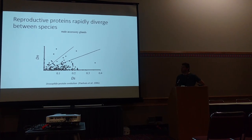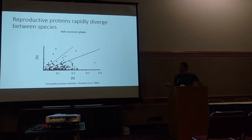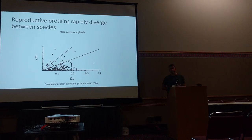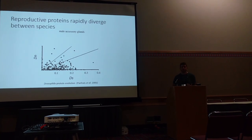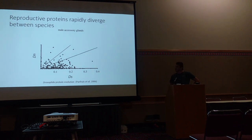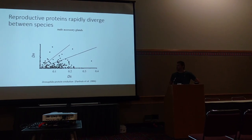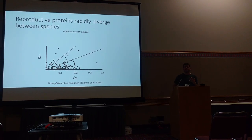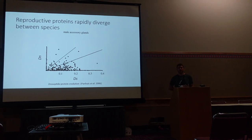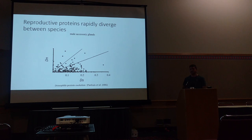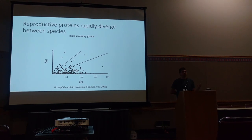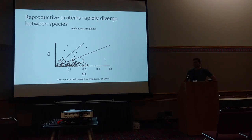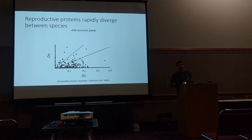Talking about reproductive proteins and molecular evolution might make you think of a classic figure like this. We see time and again in animals that reproductive proteins tend to diverge more quickly than the genomic background, as evidenced by a higher rate of non-synonymous substitution. A lot of times when we see this result, it's implicitly or explicitly implied that this is due to selection of some sort — sexual conflict or something about speciation — and that this rate of non-synonymous change is driven by adaptation and positive selection.